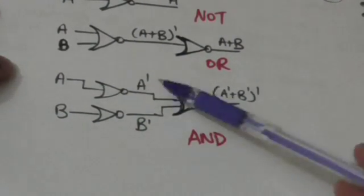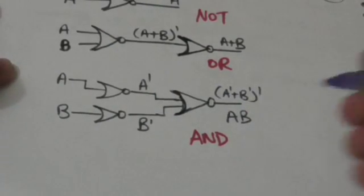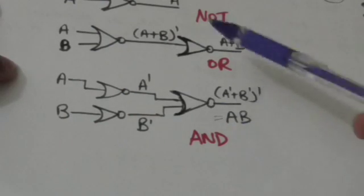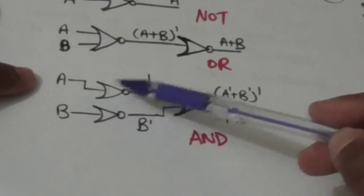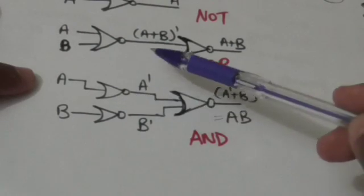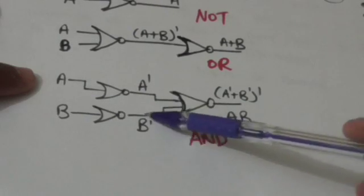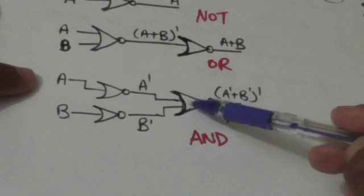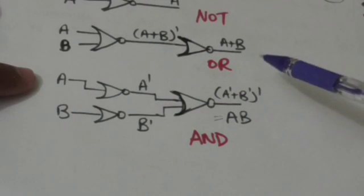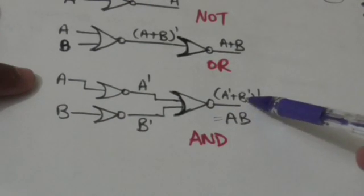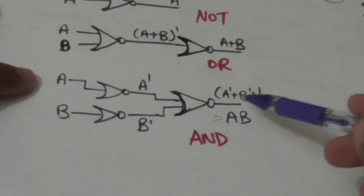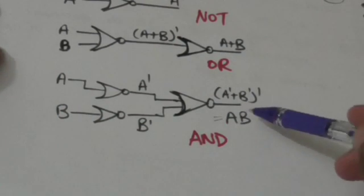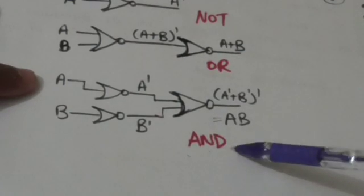Now we have to implement the AND operation by NOR gates. This circuit, made up of NOR gates, performs AND operation. The output of the first NOR gate is A-not, and the output of the second NOR gate is B-not. These are connected to the inputs of a third NOR gate, whose output is the complement of (A-not plus B-not), which equals A AND B by De Morgan's theorem.